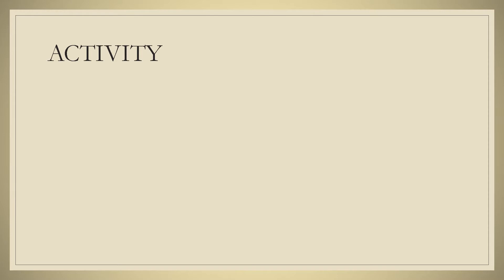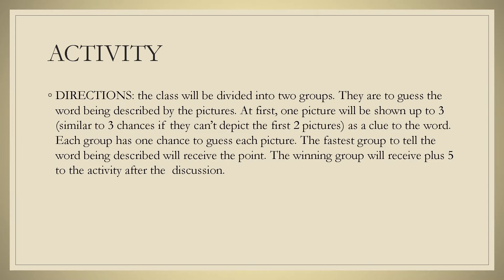Let us have an activity first as an introductory to our lesson for today. Here are the directions: The class will be divided into two groups. They are to guess the word being described by the pictures. One picture will be shown up to three — similar to three chances — if they can't depict the first two pictures as a clue to the word. Each group has one chance to guess each picture. The fastest group to tell the word being described will receive the point. The winning group will receive plus five to the activity after the lesson discussion. Are you ready class? If yes, then let's start.